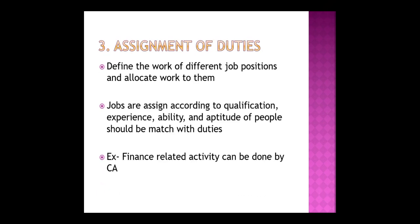The third step is assignment of duties. After making departments according to similar activities, the next step is assignment of duties — defining the work of different job positions and allocating work to them. Within a single department, for example a planning department, there may be a manager, supervisor, workers, planning assistant, or peon. Within a single department, how many job positions are there should be categorized — that is the work of middle and top level management.